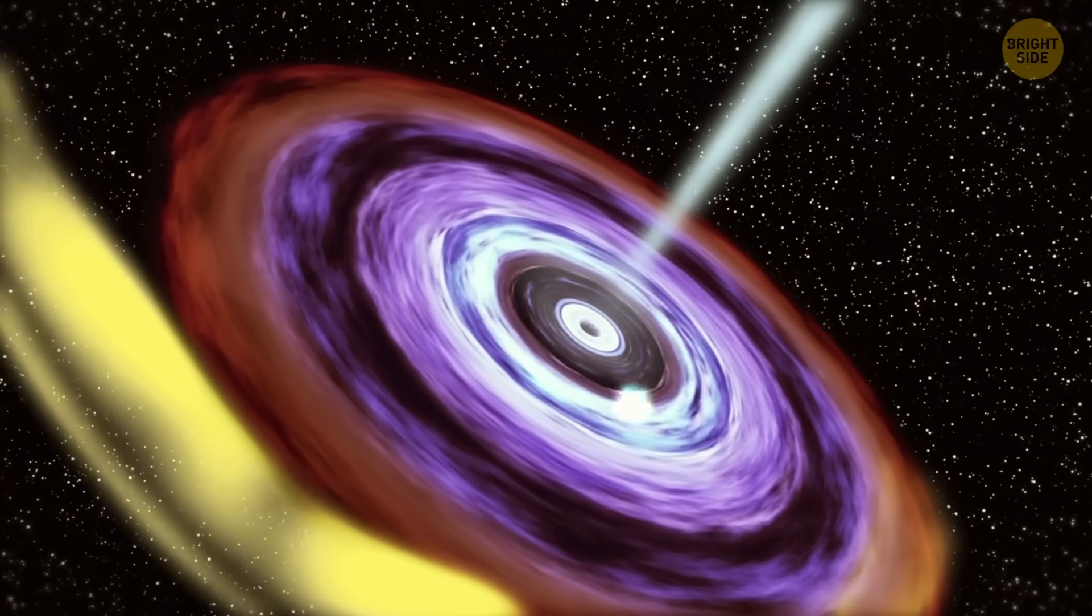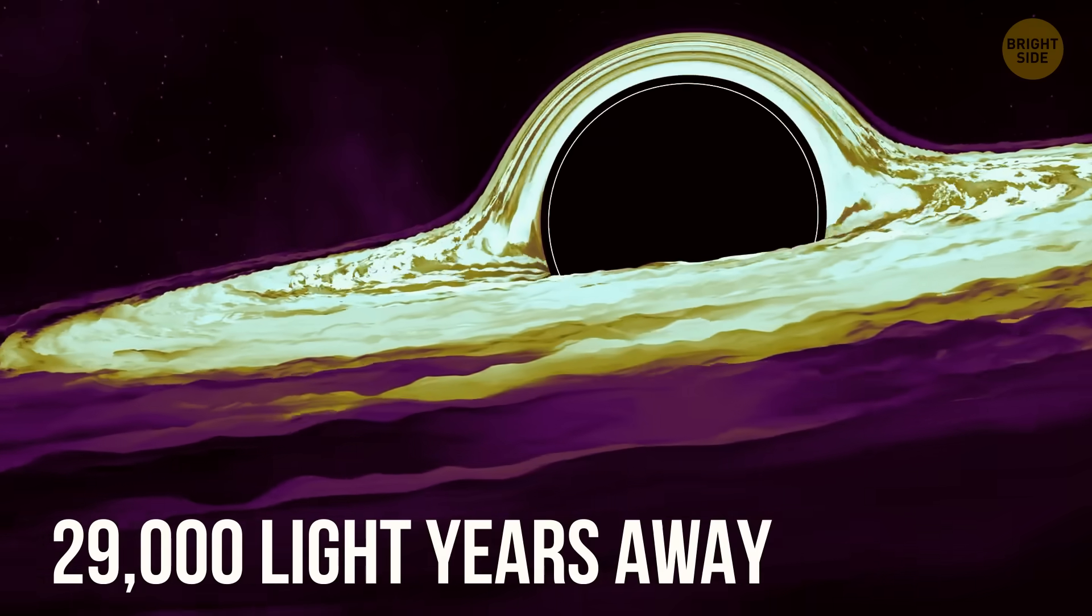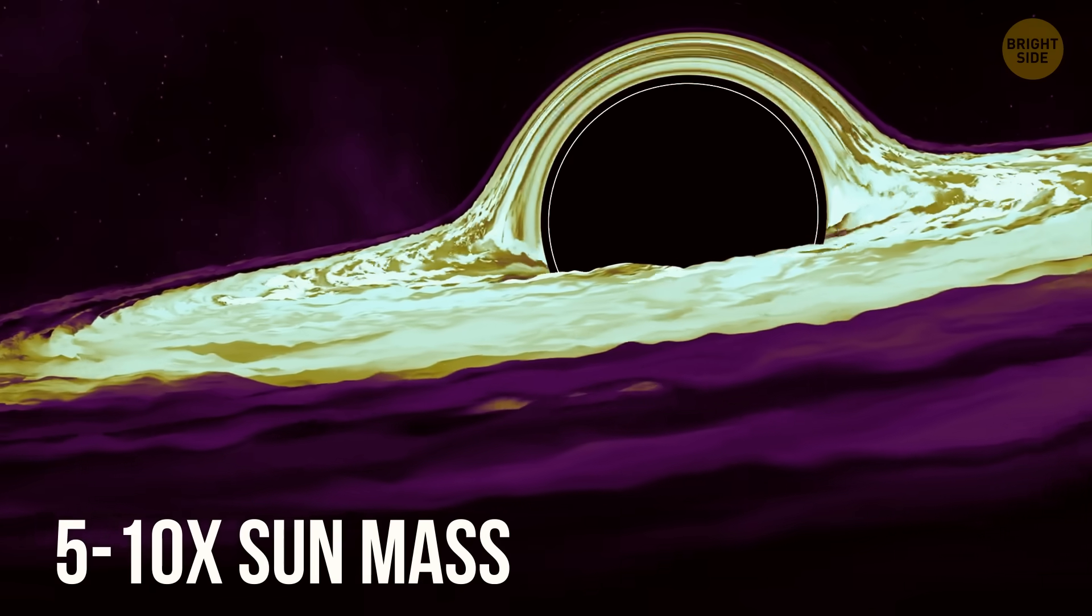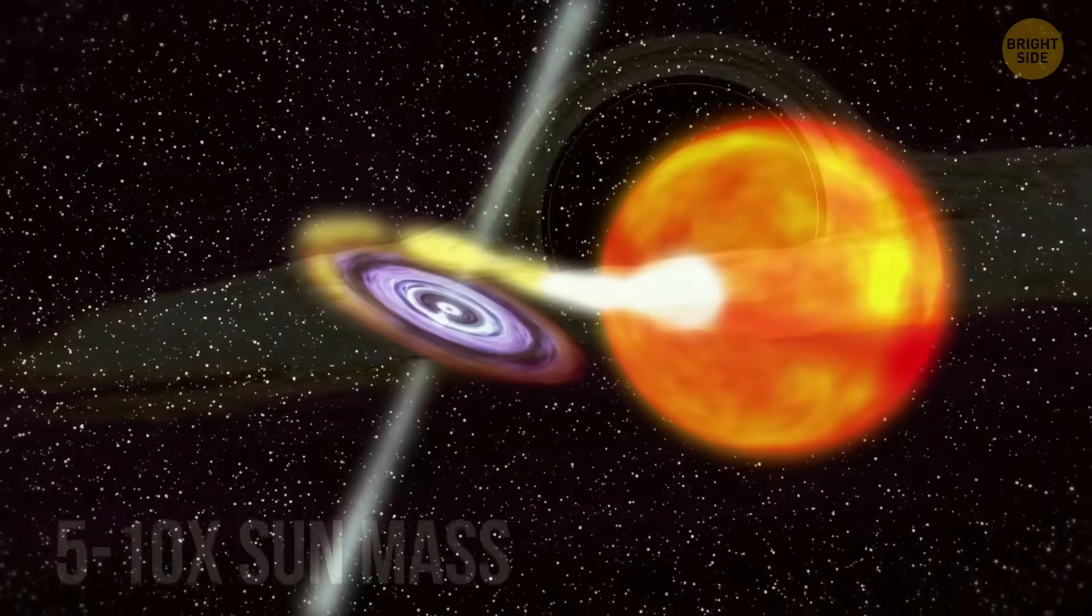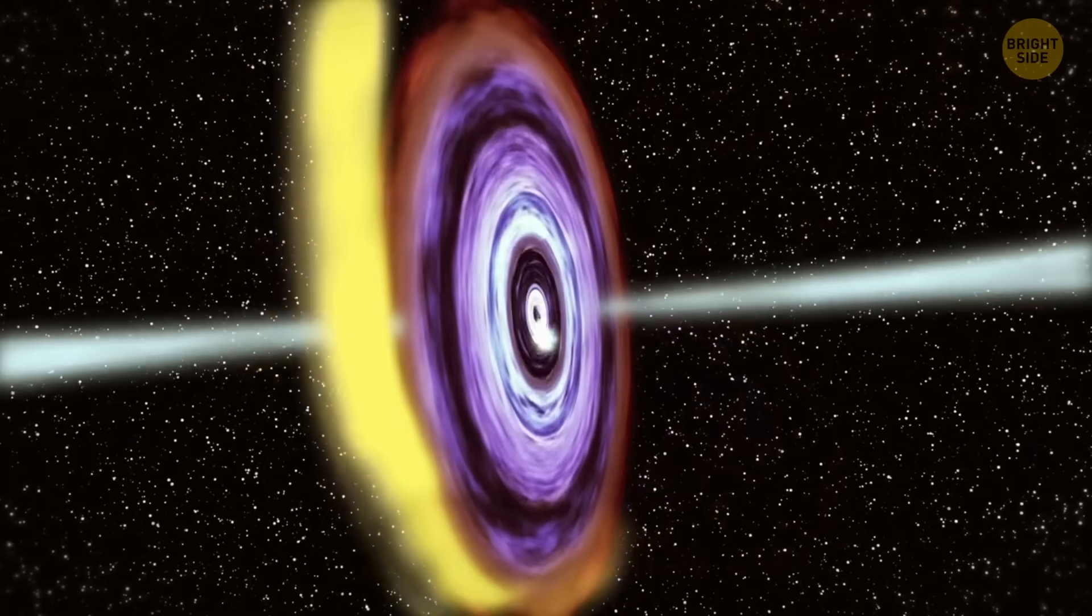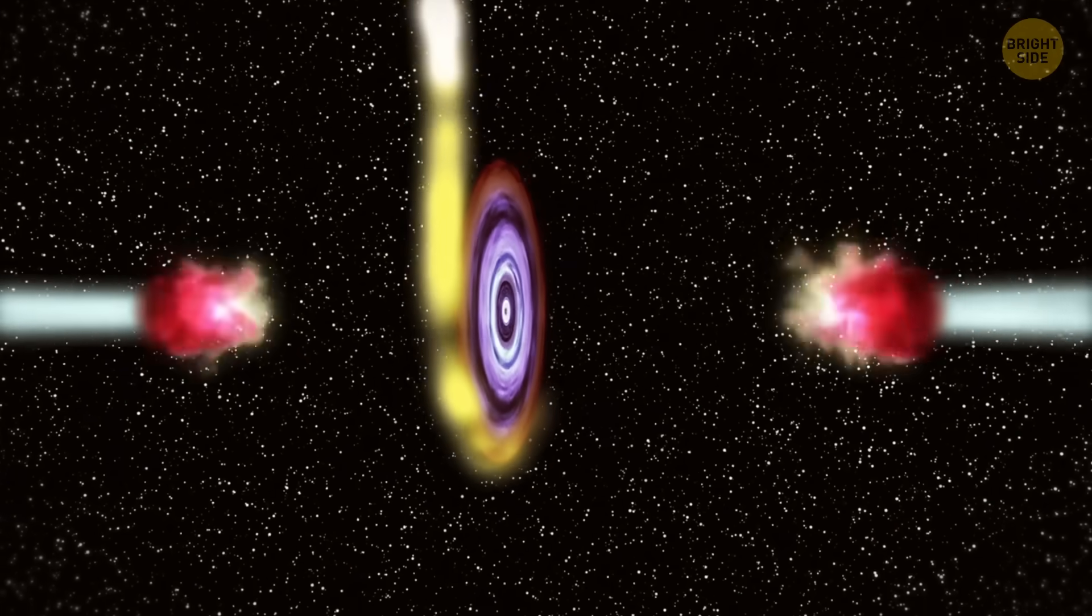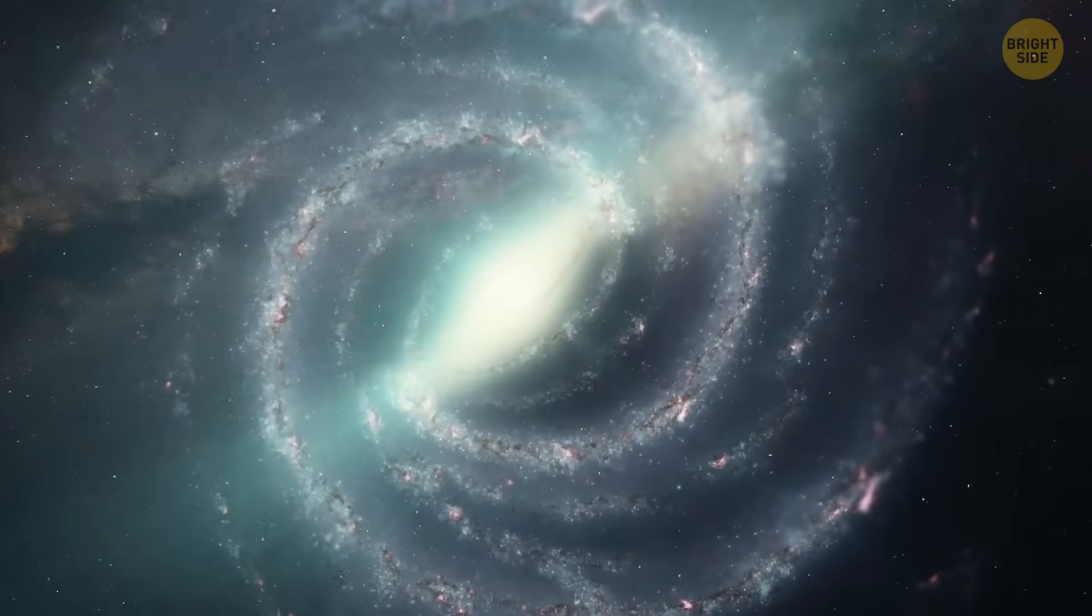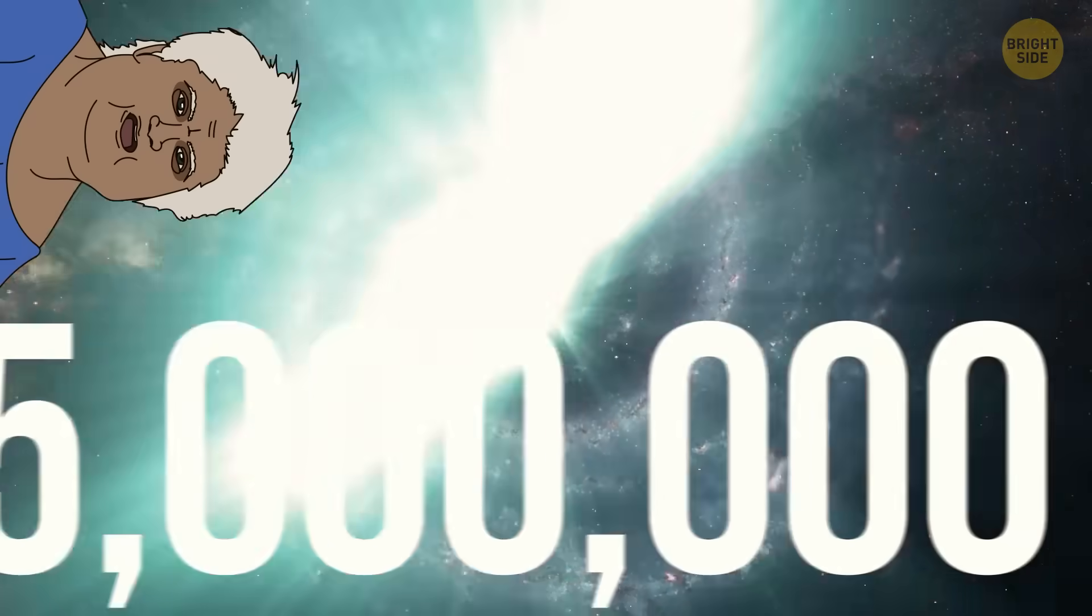For example, astronomers studied one relatively small black hole, which is about 28,000 light-years from Earth and weighs between 5 to 10 times the mass of the sun. And they saw how this black hole pulled matter off a companion star and then blasted some of it out in the form of huge bullets of gas. These bullets are super fast. They move at nearly a quarter the speed of light.